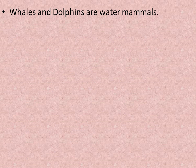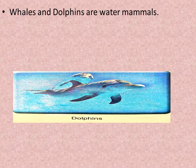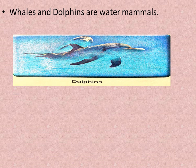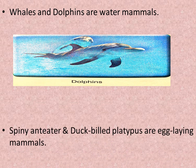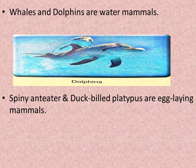Whales and dolphins are water mammals. Whales and dolphins give birth to young ones. We also have one exception — the egg-laying mammals. Examples: spiny anteater and duck-billed platypus.